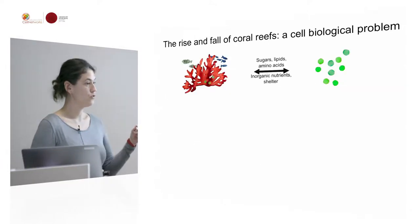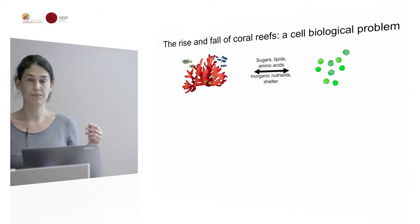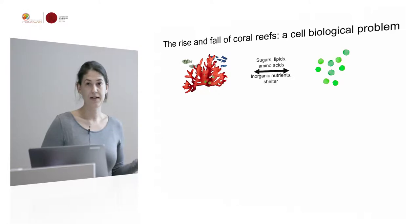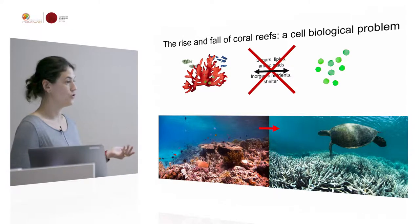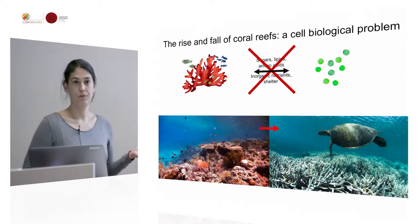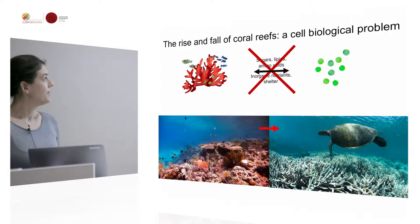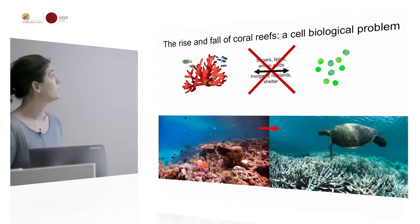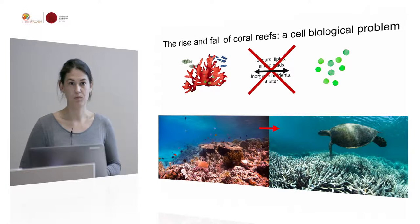The transfer of nutrients is actually essential to the whole ecosystem, because they thrive in an otherwise very nutrient-poor environment. And if this is disturbed by a phenomenon commonly known as coral bleaching, the whole ecosystem may actually die. I therefore like to argue that the rise and fall of coral reefs is actually a cell-biological problem.